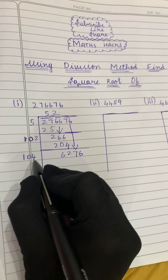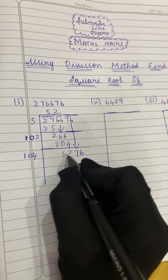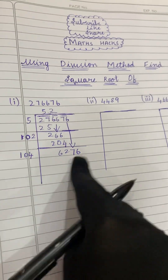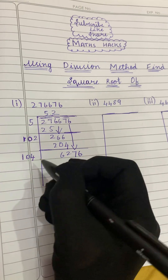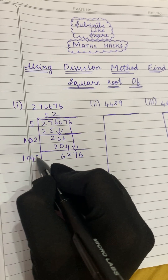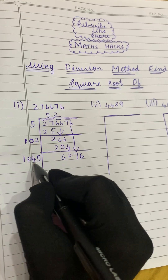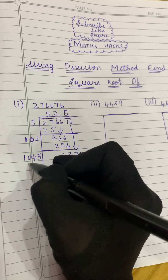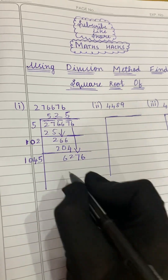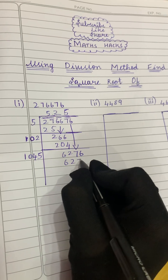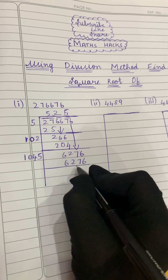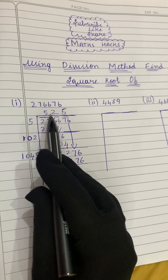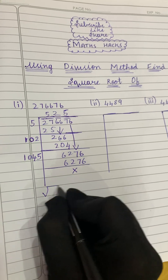We have four digits here so we add one more digit to 104. Think of a number: 1045 × 5 = 6276, which is exactly what we need. Subtracting gives a remainder of 0. Our quotient is 525, so the square root of 276676 is 525.